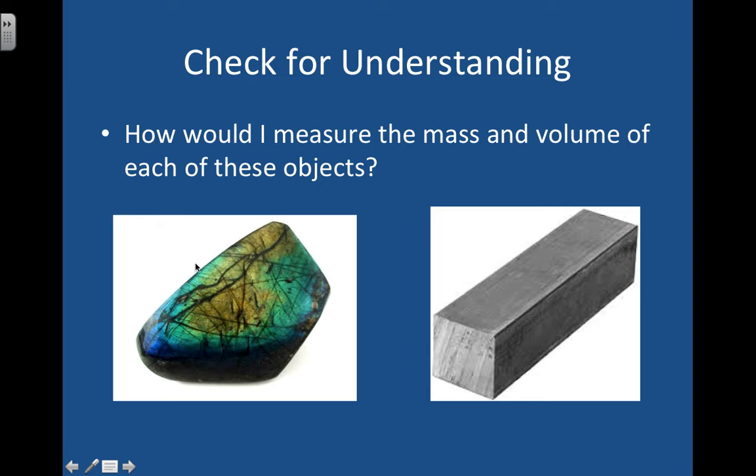Okay. So first off, for the Labradorite, since it's an irregular shape, to get the volume, you would use the water displacement method. You'd put some water in a graduated cylinder and record the volume. Then you'd put in the Labradorite, a stone, and see how much the water raised by. And for the mass, you would use the electronic balance.